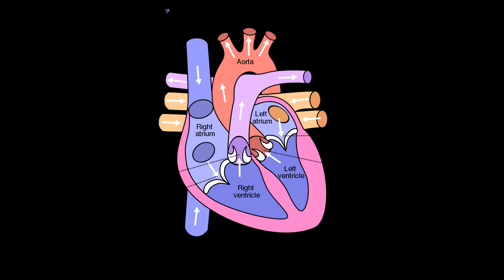They're going to come in through the superior vena cava, which is the blood coming from the regions above the heart, like our head, and then the inferior vena cava, which is coming from below the heart, so like our legs. And then these are going to carry deoxygenated blood.